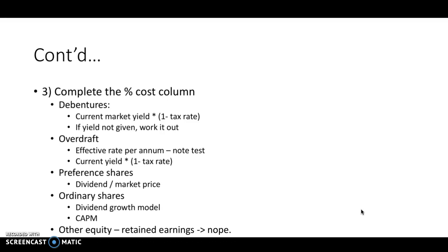Next step is to complete the percentage cost. For debentures, you need to consider the current market yield times one minus the tax rate, because we've got that tax incentive there that we can claim. If the yield's not given, we need to work that out using the methods we've already looked at. For an overdraft, look at the effective rate per annum. Remember that the effective rate per annum may be different than the quoted rate. When the per annum figure is worked out in multiple periods per year, it won't be the exact same thing as the per annum rate. For preference shares, dividend divided by market price. Ordinary shares, use the dividend growth model or the CAPM model. Don't include retained earnings because that's already considered in the shares.